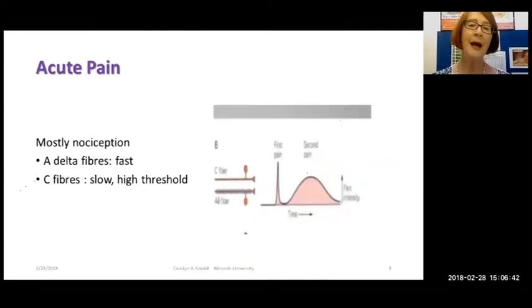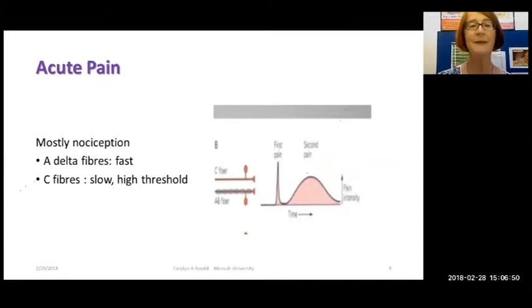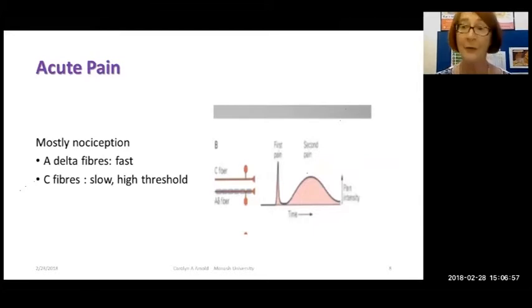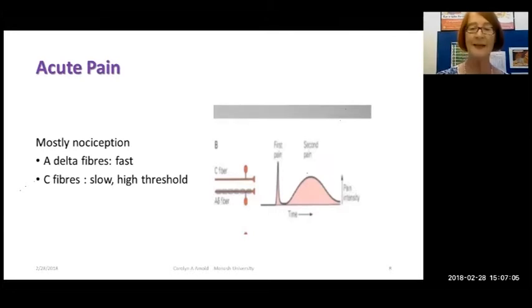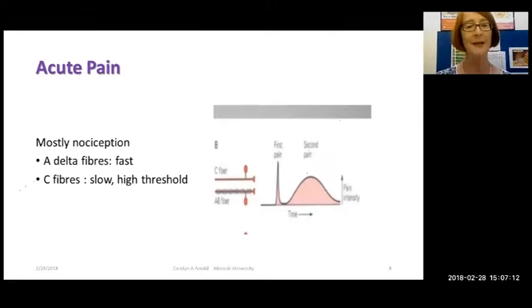Acute pain is very well known. When there's a nociceptive stimulus, it activates A-delta fibers in the periphery, which are the fast fibers — the ones that make you withdraw your hand from heat. Then there are the slightly slower C fibers that transmit more slowly but when activated seem to play a bigger role in the ongoing pain. The A-delta fibers are the first responders and the C fibers are there to keep the messages coming. That's the basic physiology of acute pain.